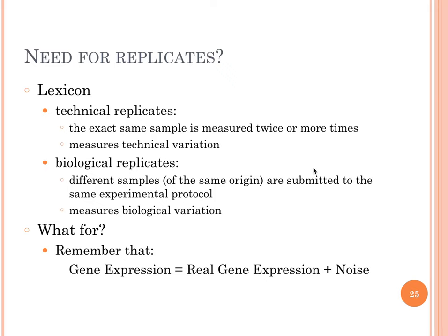Why do we need replicates? In any experiment, the result — in our case the gene expression we measure from RNA-seq — will be the sum of the actual gene expression plus some noise. That noise can be technical, such as measurement error from the machine, or biological, because two samples may have been collected from cells in slightly different parts of the cell cycle. It's important to understand and model this noise so that we can isolate the true gene expression, which is what we are after.